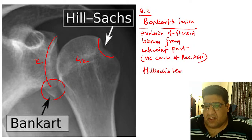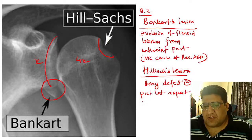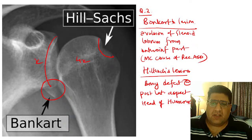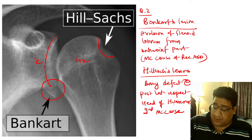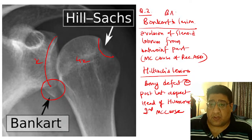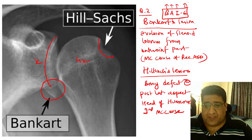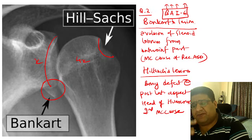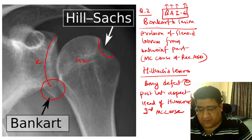At the same time, in Hill-Sachs lesion, you have a bony defect at the posterolateral aspect of the head of the humerus — that is Hill-Sachs lesion, the second most common cause. The question framework was: Bankart lesion is antero-inferior glenoid labral avulsion. It is not the head — it is the glenoid; not posterior — it is anterior; not superior — it is inferior. Simple as that. This was the second question.